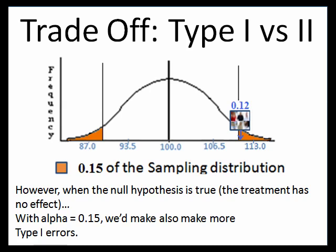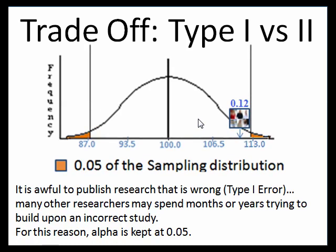But we also have to consider the possibility — what about all those times when the null hypothesis is true? If we have our alpha at 0.15, that means for 15% of our research studies where the null hypothesis is true, just due to sampling error we're going to end up with a sample mean so extreme we'll go ahead and reject the null incorrectly. That being a Type 1 error. Well, if you publish something as having an effect, other researchers read it and get excited and then start to invest months or even years.